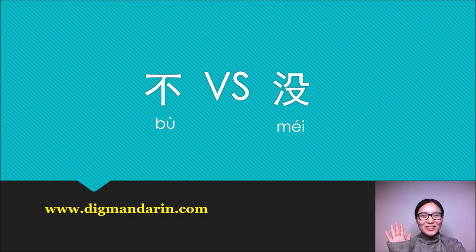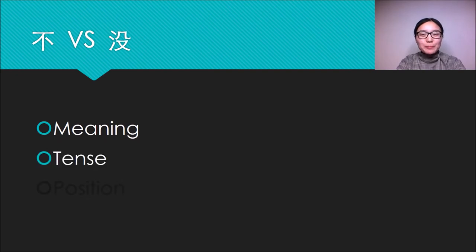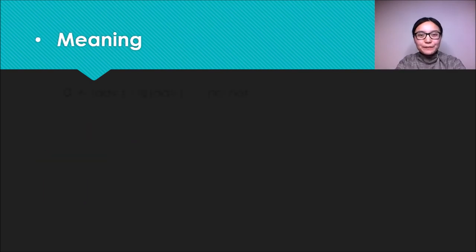Hi guys, welcome to Decamandering. I'm Cecilia, and today we will talk about the differences between Bu and Mei. Let's catch the outline about this video. We will talk about the differences from three aspects: first about meaning, second about tense, the last part is about position.